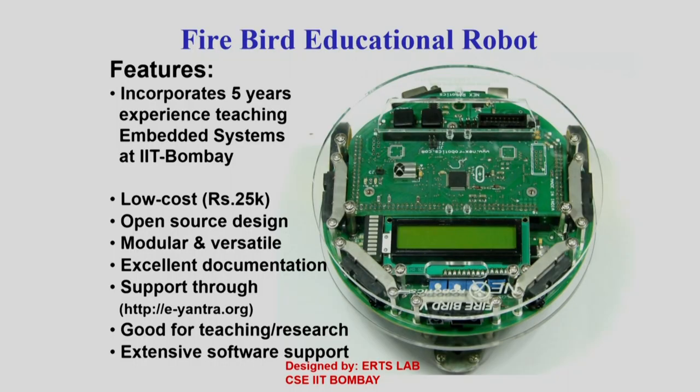In summary, we are trying to empower students and teachers, giving them practical skills to solve real problems — which seems to be a weakness of our education system at the moment. We have an eYantra robot costing about 25,000 rupees, which incorporates five years of our teaching experience. It has various sensors, including proximity sensors that can sense up to one and a half meters with millimeter accuracy.